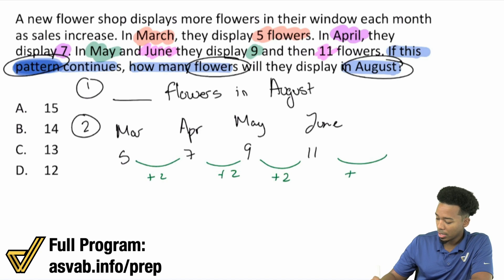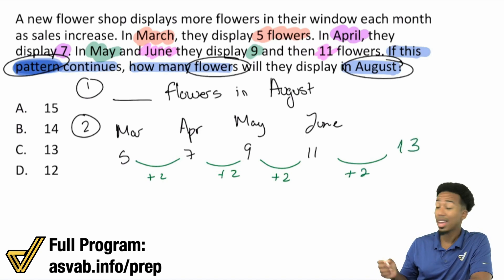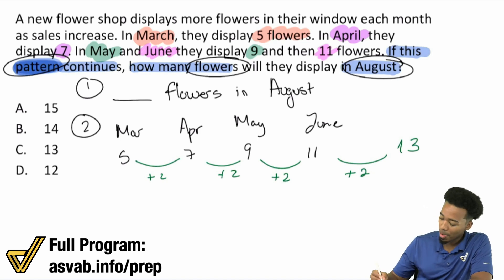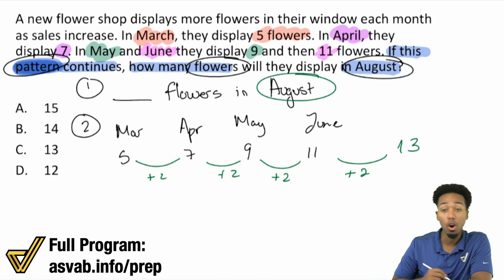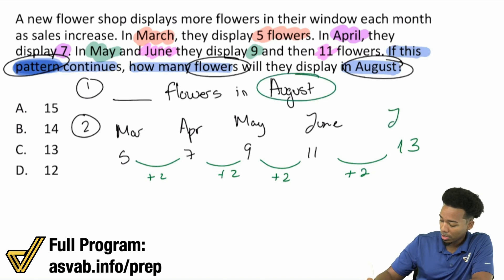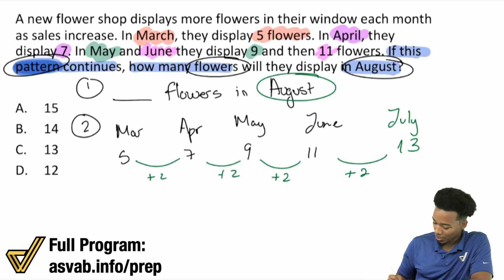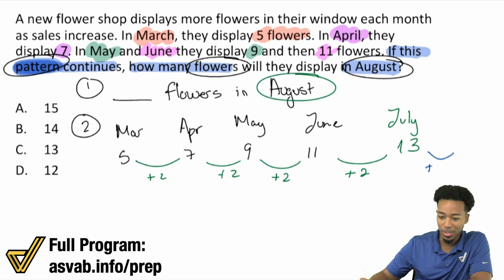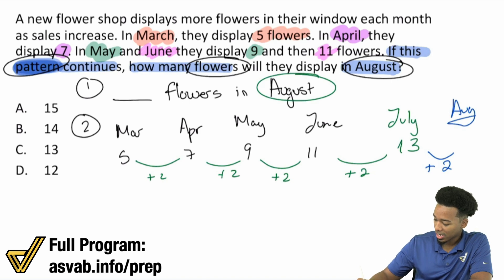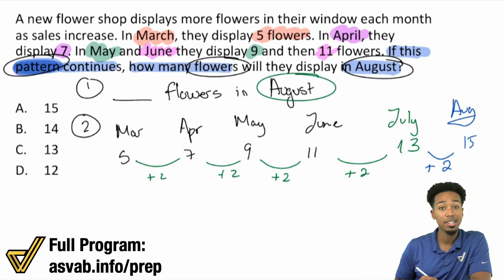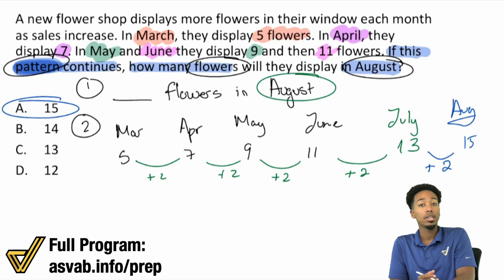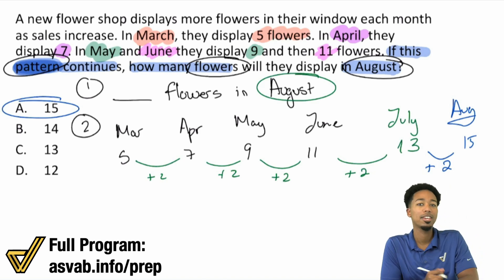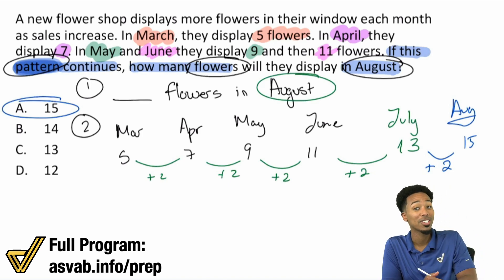We're going to keep going. We'll add two and we'll get thirteen in the next month. And so if you looked at this and said C is the answer, thirteen is the answer — you are wrong. Because remember, we have to understand that we're looking for August. What's after June? July, not August. So after July, if we add two again in August, then we'll have fifteen. Although this is a very straightforward question, it can be very tricky if you forget to understand what the question is asking for.